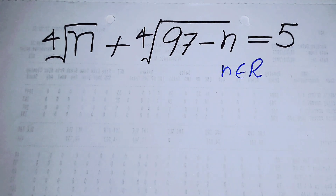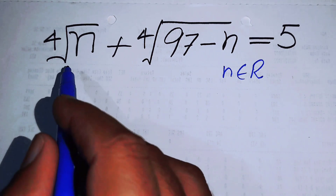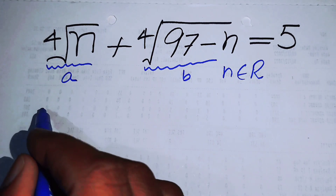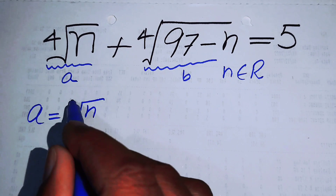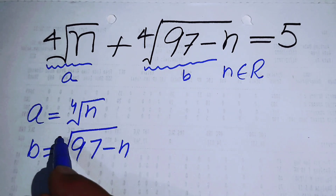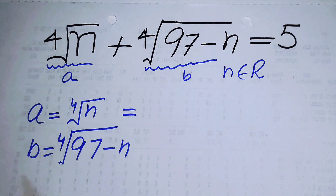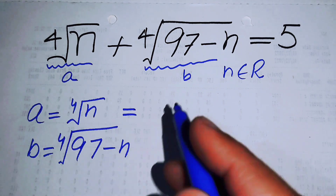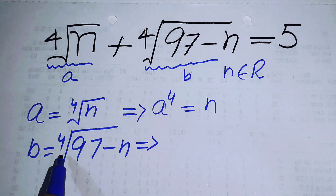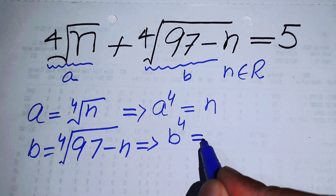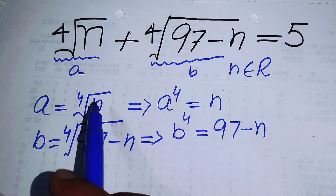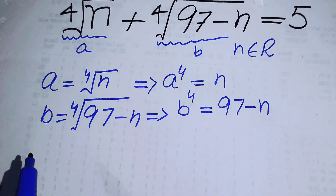The very first thing we are going to do is take this expression equal to a and this expression equal to b, so that a equals the fourth root of n and similarly b equals the fourth root of 97 minus n. After that we take the fourth power on both sides, so a⁴ = n and b⁴ = 97 minus n.